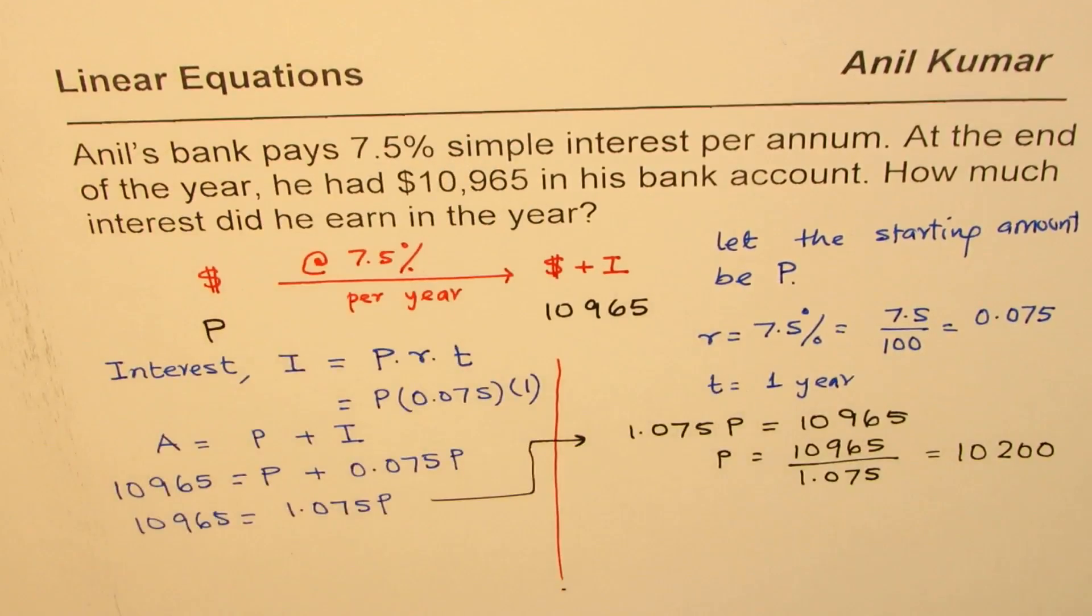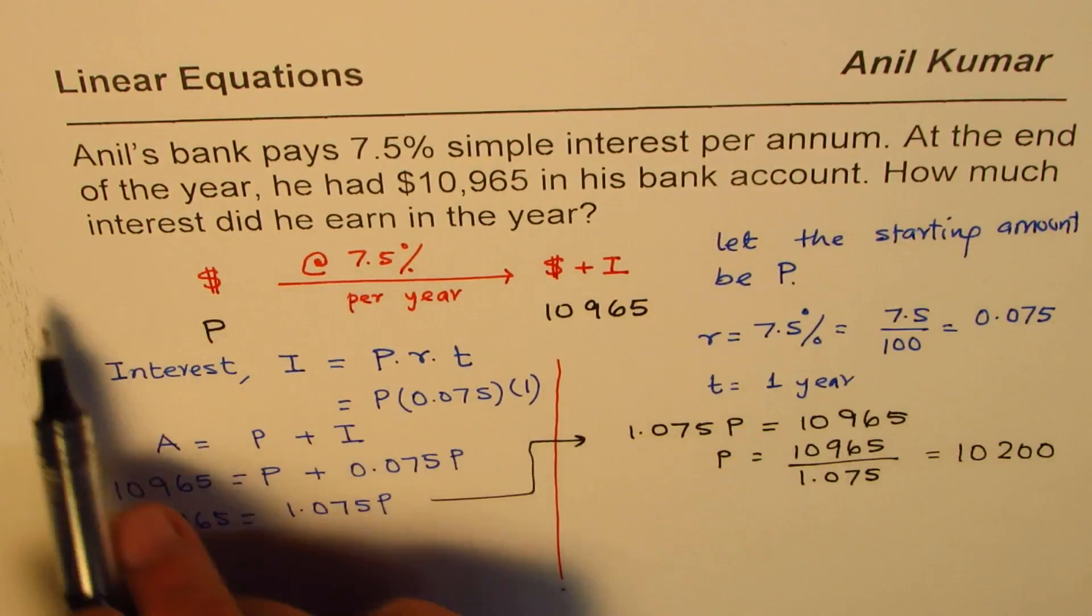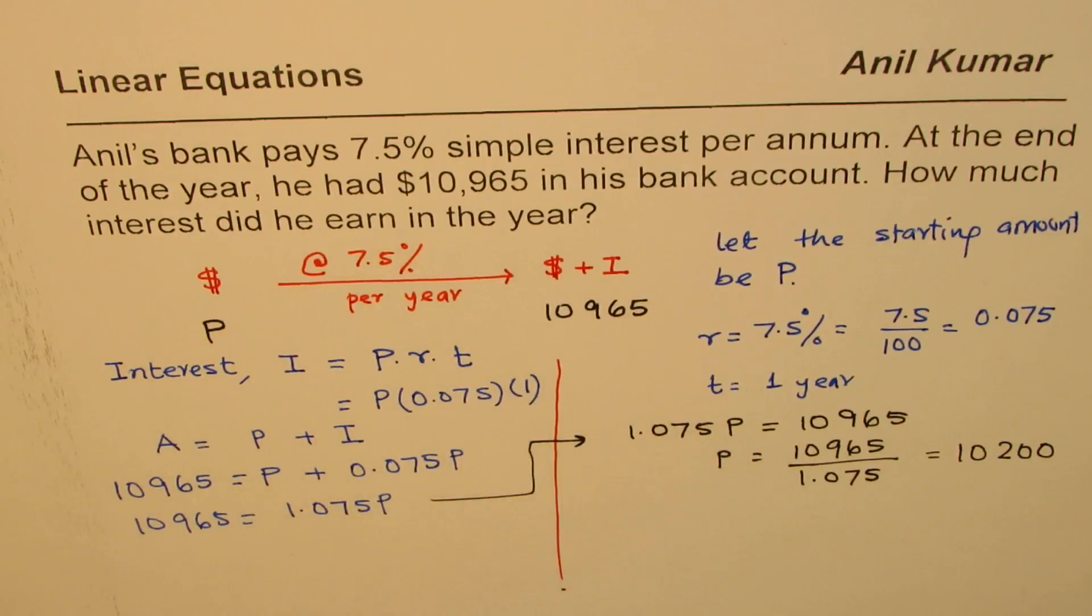It is 10,965 divided by 1.075 which is equals to 10,200. So, we get principle amount of 10,200. So, how much interest did he earn? We will find the interest.